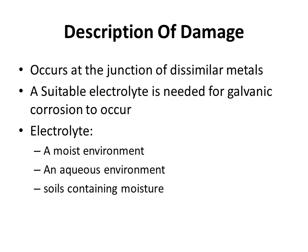Description of damage: the most important point related to galvanic corrosion is that it occurs at the junction of dissimilar metals. A suitable electrolyte is needed for galvanic corrosion to occur — this means a moist environment, an aqueous environment, or soils containing moisture. Two conditions must be met: the junction of dissimilar metals, and a suitable electrolyte, which may be the fluid flowing inside or a suitable outside environment.